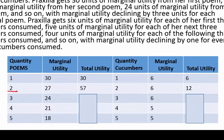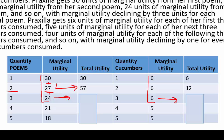As we increase our consumption, we increase our utility. At two poems consumed, our marginal utility is 27 for the second poem, so we add these two together to get a total utility of 57. For the third poem, we add all three units to get the total utility. Same thing with cucumbers — we add all three of the first three cucumbers to get that next number.